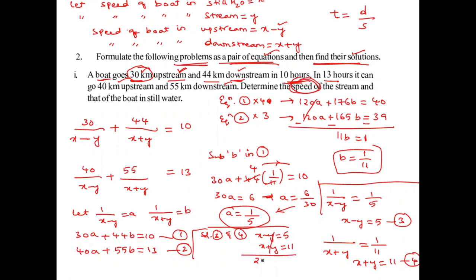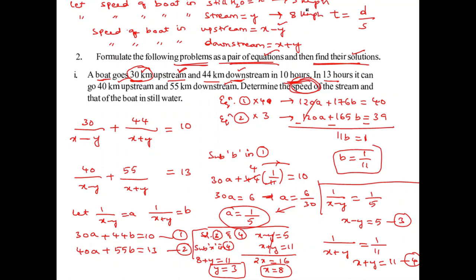The required answer is x equals 8 and y equals 3. The speed of the boat in still water is 8 kilometers per hour, and the speed of the stream is 3 kilometers per hour.